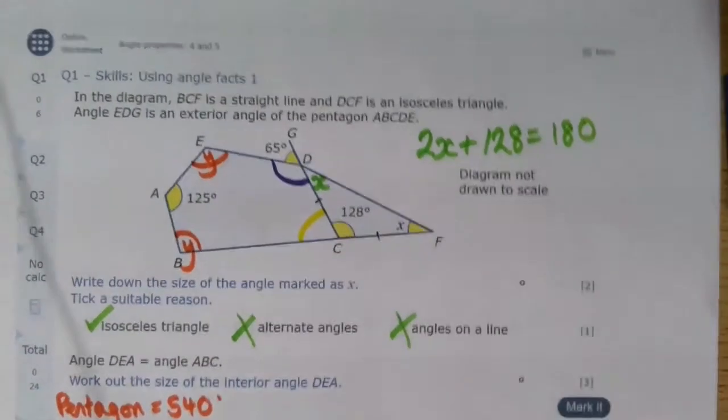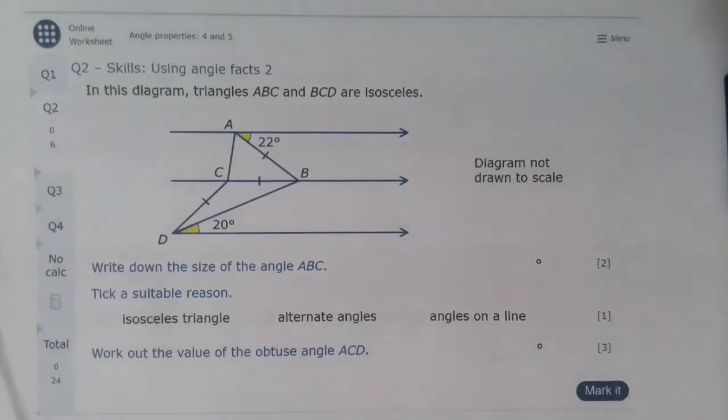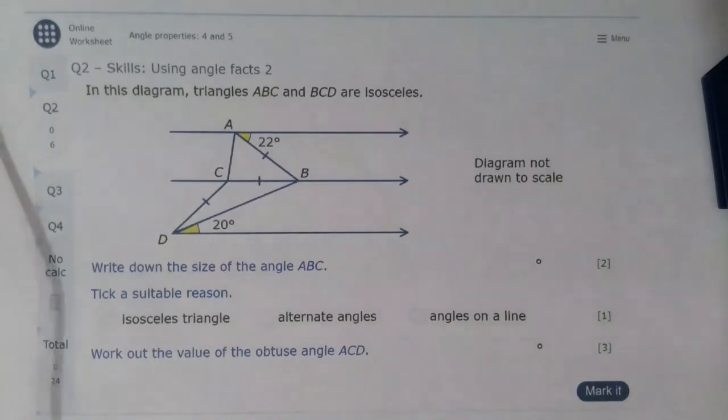Question 2: We've got some parallel lines. It's important that we know they're parallel because they've got arrows on them. It also tells us that we've got some isosceles triangles, but they've marked on the equal lines for us, which is very helpful.